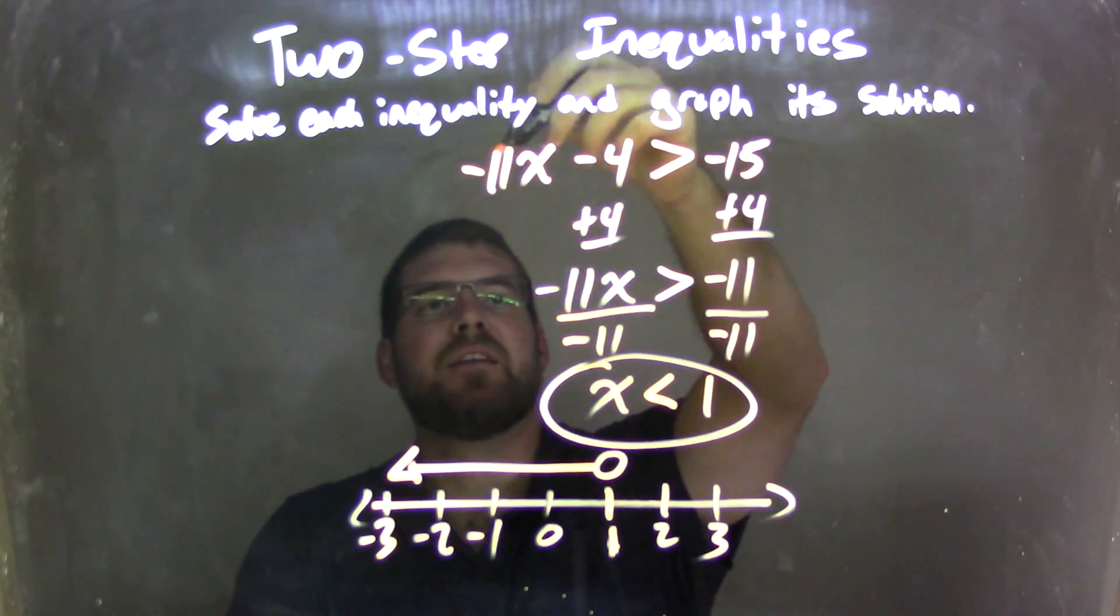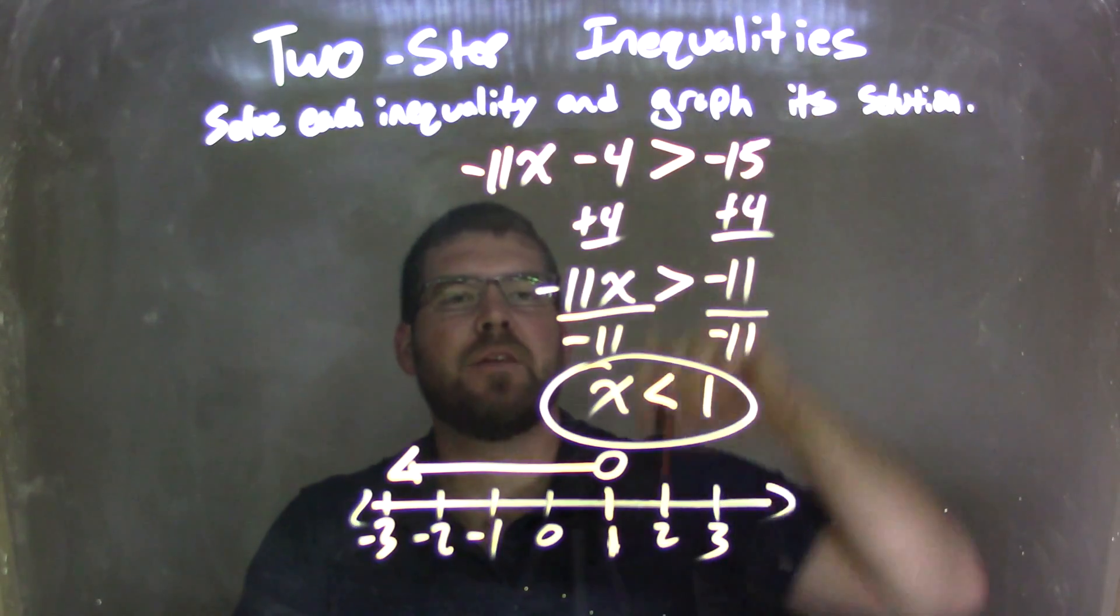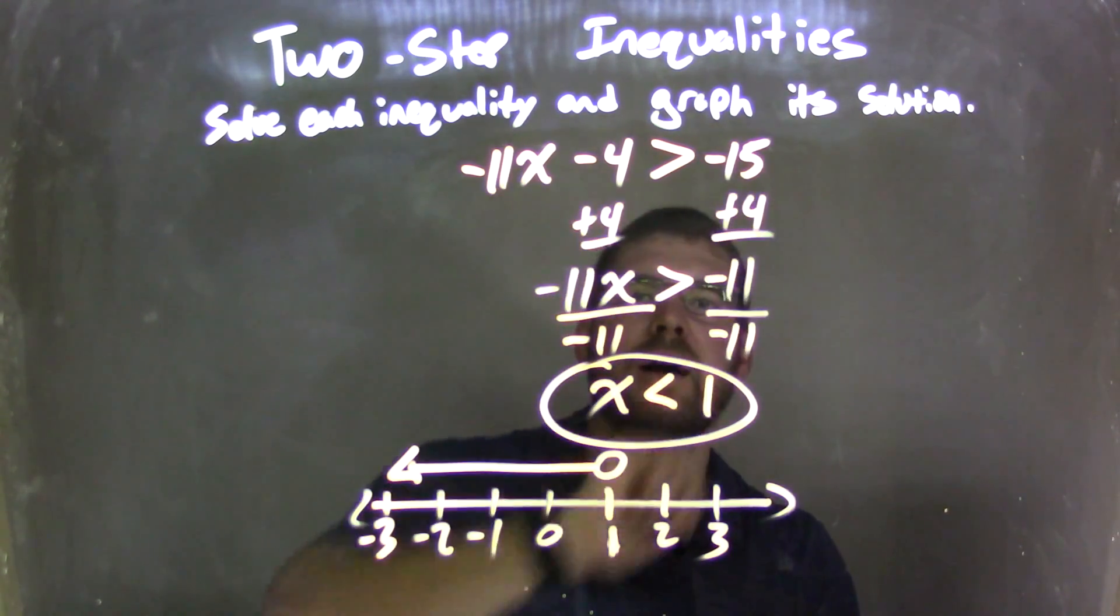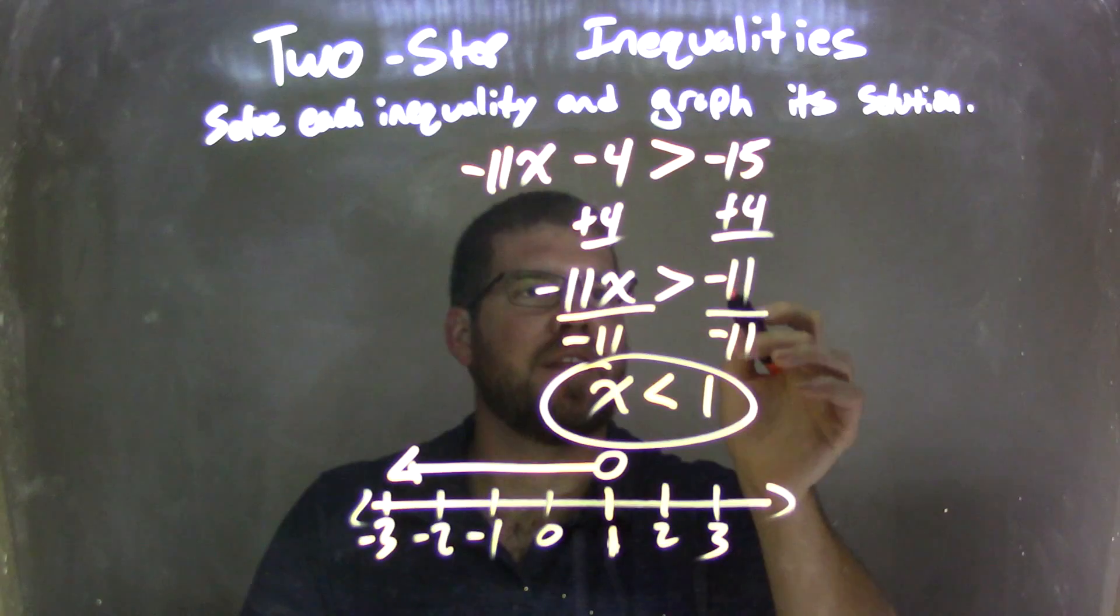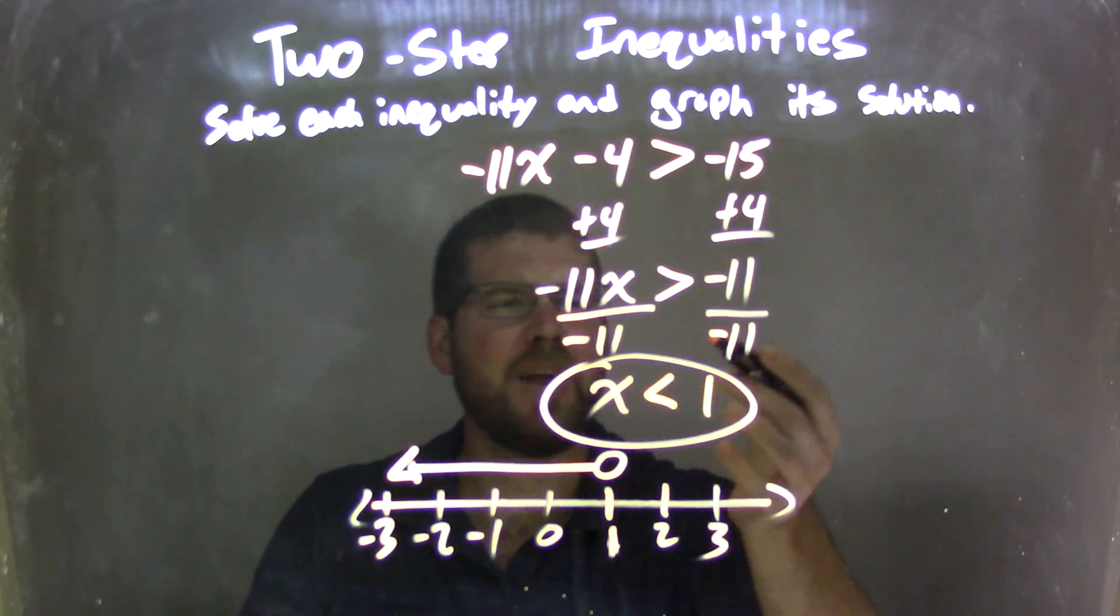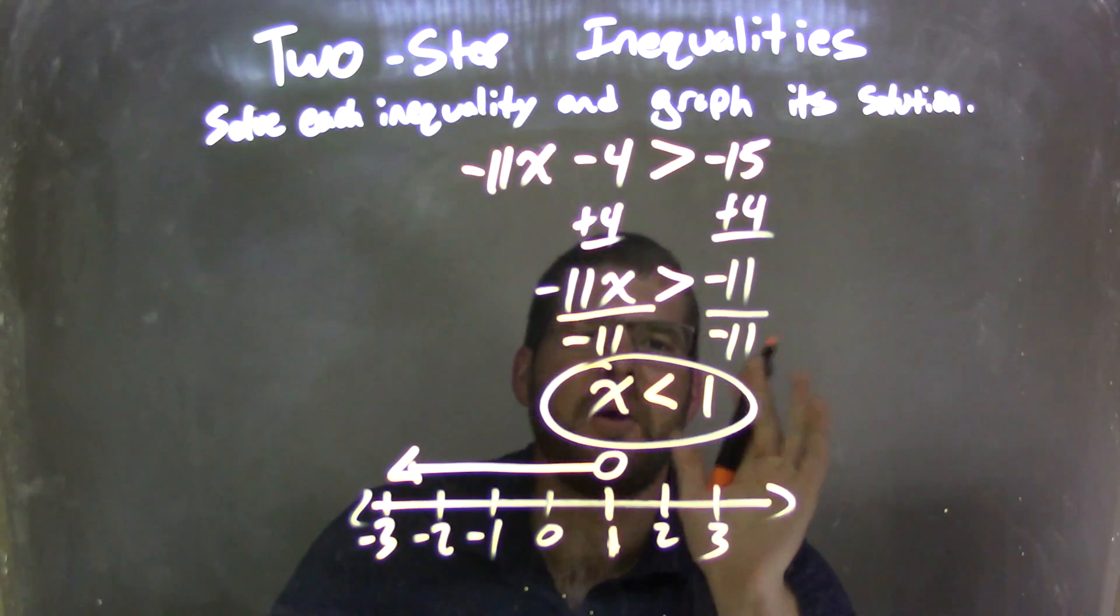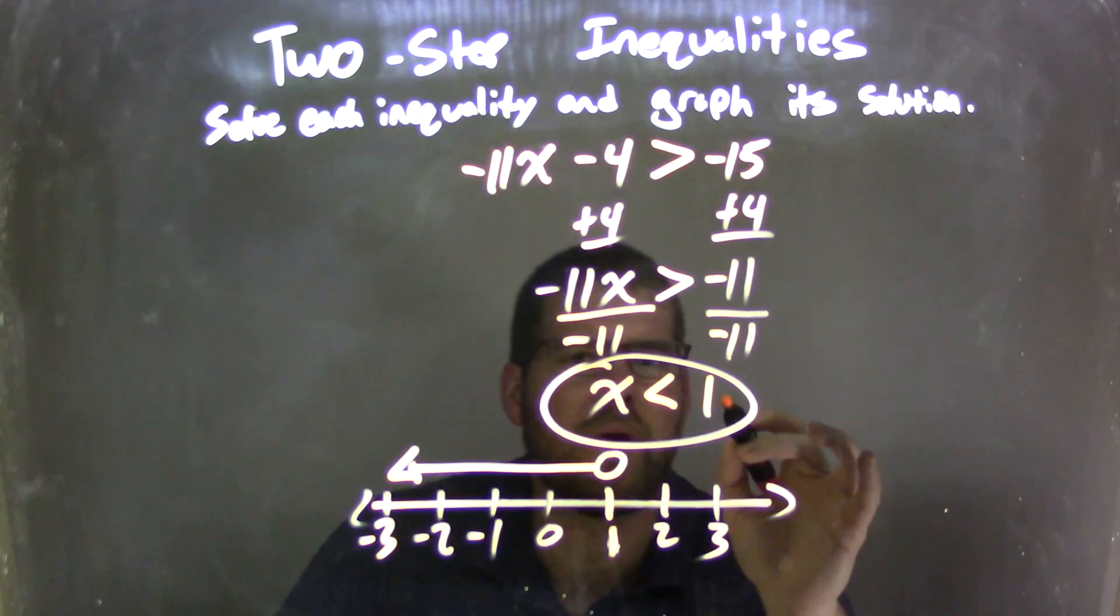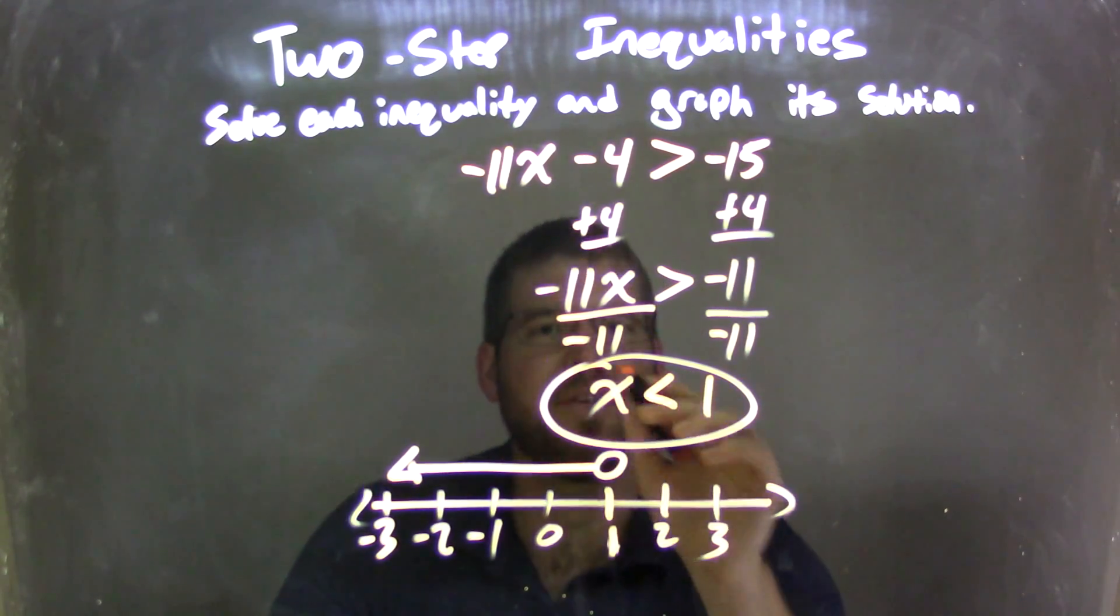So let's recap. We had negative 11x minus 4 is greater than negative 15. I added 4 to both sides, giving me negative 11x is greater than negative 11, which is because negative 15 plus 4 is negative 11. I divided by negative 11 on both sides. Pretty easy step there, giving me a positive 1 on the right, just the x on the left because these parts cancel.